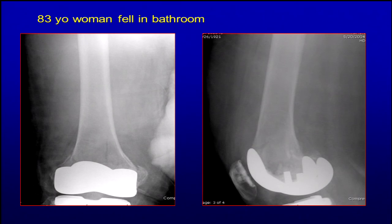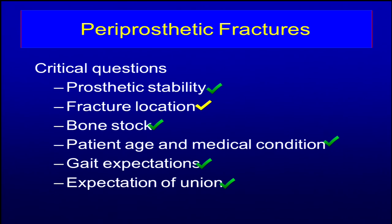Going through our decision-making tree: the prosthesis appears stable. The fracture location is concerning because it's so far distal. Bone stock is not too bad for a periprosthetic. The patient's in reasonable shape — she's a fairly vigorous 83. She does expect to walk again. I think if we did a nice job fixing this, she could probably cheat a little bit on protected weight-bearing. And I would expect this to heal.